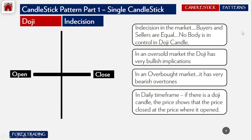Whenever you see a doji candle in an oversold market, it has very bullish implications. In an overbought market, it has very bearish overtones. On the daily time frame, the doji shows that the price closed at the same level where it opened — it opened early in the day and closed at the same price.